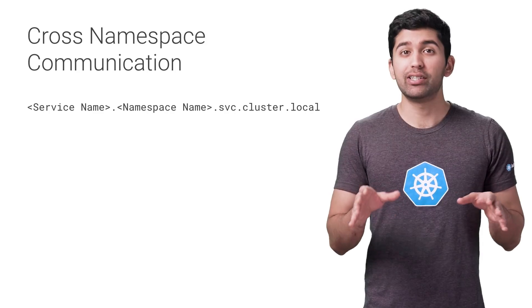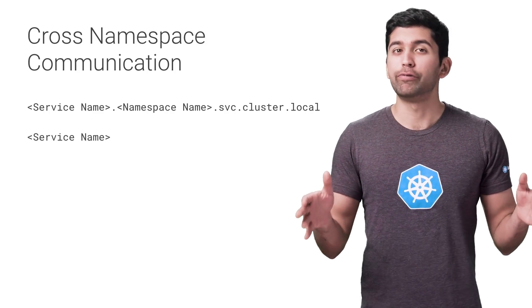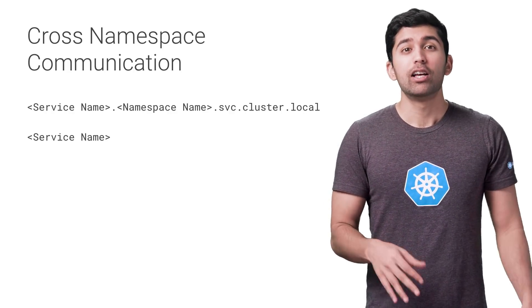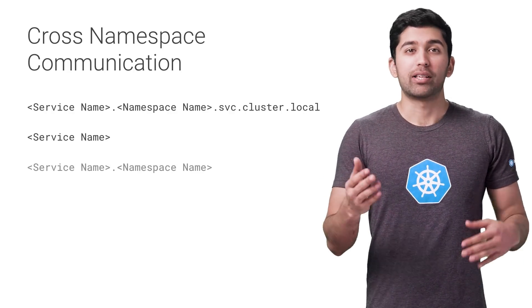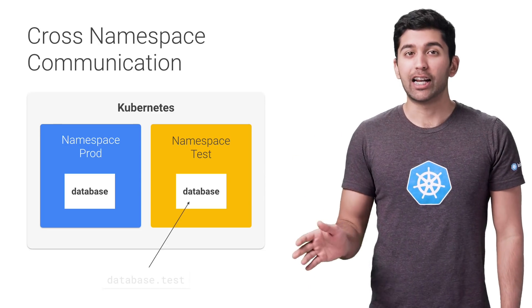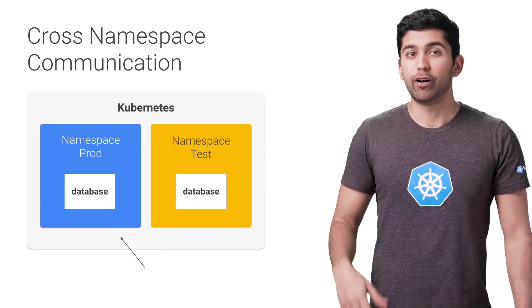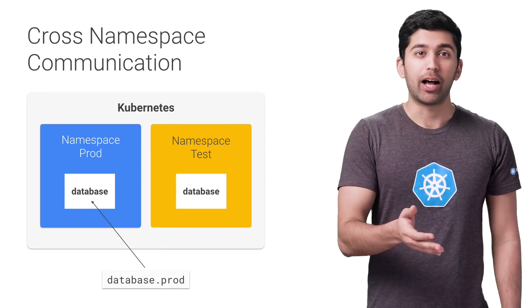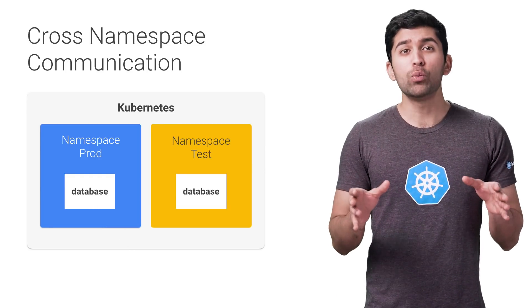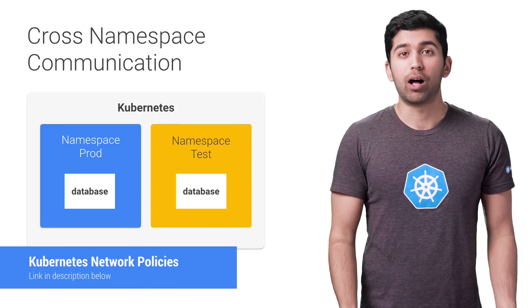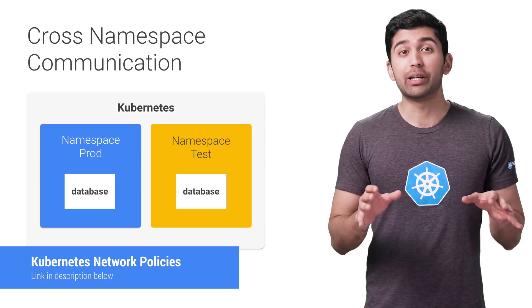Services in Kubernetes expose their endpoint using a common DNS pattern. Normally you just need the service's name and DNS will automatically resolve to the full address. However, if you need to access a service in another namespace, just use the service name plus the namespace name. For example, if you want to connect to the database service in the test namespace, you can use the address database.test. And if you want to connect to the database service in the prod namespace, you can use the address database.prod. Sometimes you do want to isolate and limit access to a namespace — Kubernetes lets you do this with network policies. Stay tuned for a future episode where we'll deep dive into these.